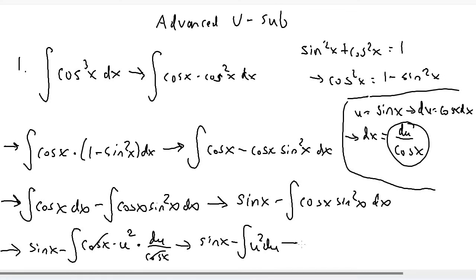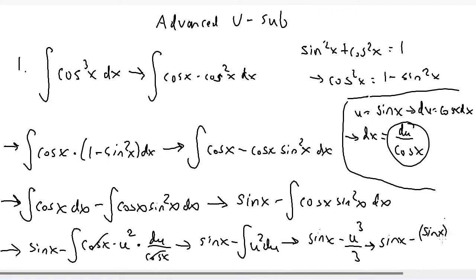Now we can just use the power rule, where we add the power by one and divide by the same power. We get sine of x minus u to the two plus one, which is three, divided by three. So the final answer is sine x minus u cubed over three, where u is sine of x. So we get sine x minus sine cubed x over three, plus C since this is an indefinite integral.